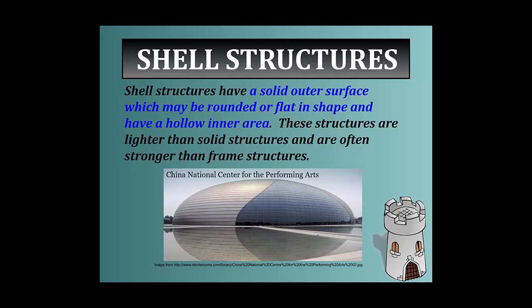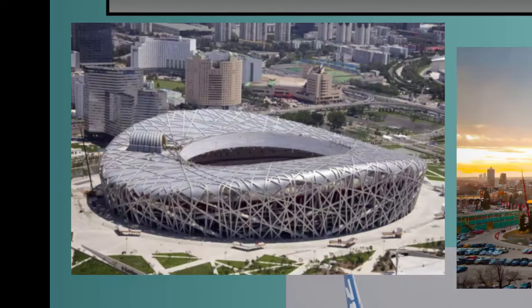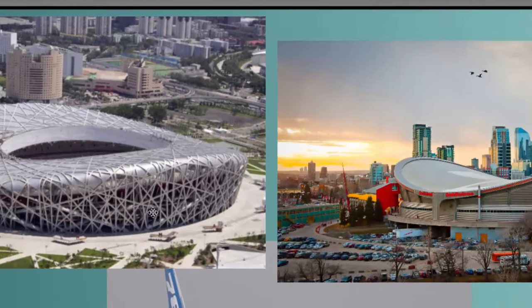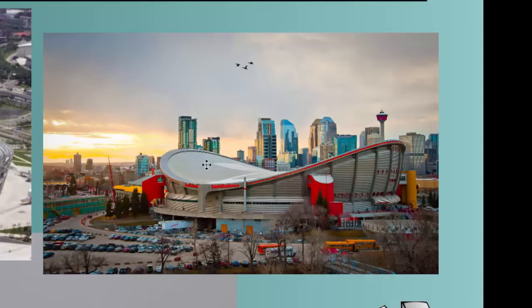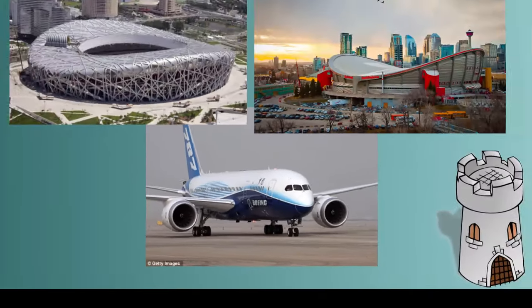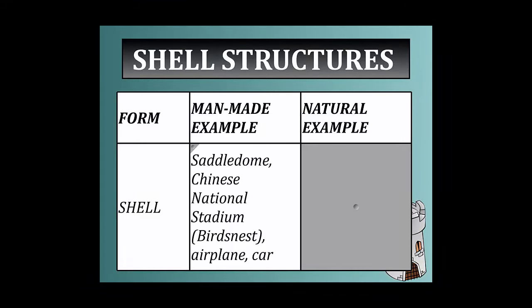Lastly is the shell structure. Shell structures have a solid outer surface, which may be rounded or flat in shape, and have a hollow inner area. These structures are often lighter than solid structures but often stronger than frame structures — you kind of get the best of both worlds. An example is the dome at the China National Center for the Performing Arts — a framed outer shell that is hollow on the inside. Other examples include the Bird's Nest Stadium in China, the Saddledome, and an airplane or a car. Natural examples include a snail shell, a turtle shell, and an egg.